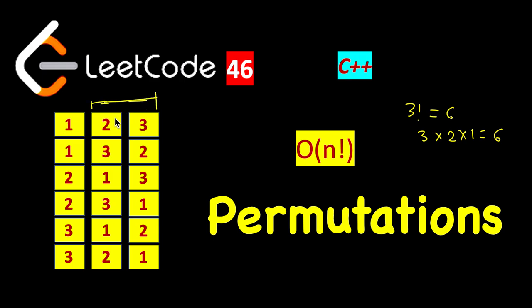When one is first, we are left with two positions and two digits, two and three. In one case two occurs first followed by three, in the next case three followed by two. Similarly when two is at the first place we are left with digits one and three, and when three is at first place we get the remaining two. In total there are six permutations possible.